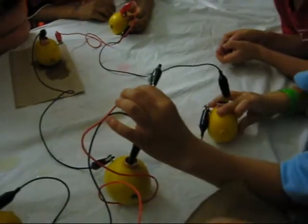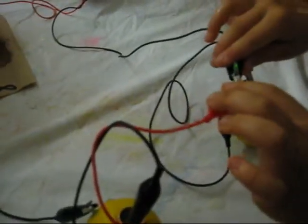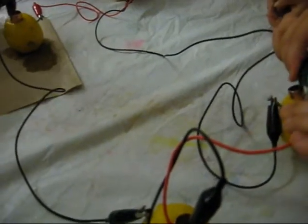Good job. How do we turn it off? If you break the circuit, what happens to the electrons? They get stuck. Yeah, they get stuck. So if you break the circuit, it goes off. Break the circuit, and when it's dark, we'll light it up.